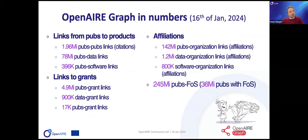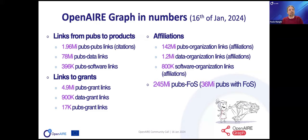In terms of links, we have a quite big amount. We are very much aligned with all known databases in terms of publication citations, adding more because we infer citations from PDFs ourselves. On top of that, we have close to 80 million publication-data links, which are very important for open science indicators, as well as 400,000 publication-software links. We also infer close to 5 million publication-grant links, 1 million data-grant links, and we work extensively on affiliations and organization links.